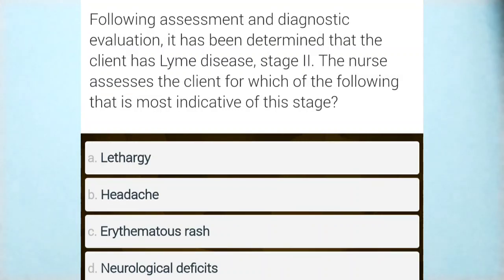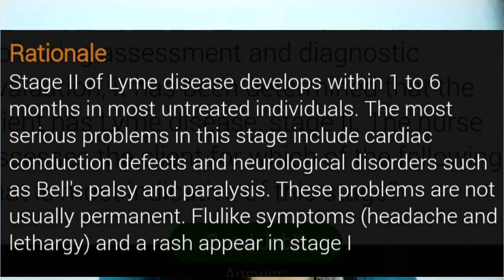Question three: following assessment and diagnostic evaluation, it has been determined that a client has stage 2 Lyme disease. The nurse assesses the client for which of the following most indicative of this stage: (1) lethargy, (2) headache, (3) erythematous rashes, or (4) neurological deficit. The answer is option 4 — neurological deficit occurs in the late stage. Lethargy, headache, and rashes occur in the initial phase — the rash appears between three and 30 days after the tick bite. Neurological deficit is most indicative of the later stage.